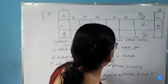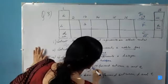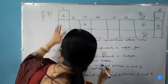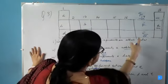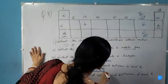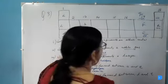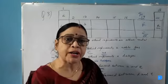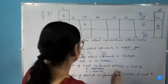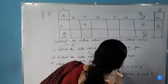Next question: what type of bond is formed between A and E? A is hydrogen, placed at the top of the alkali metal group, and E is chlorine. A bond formed between a non-metal and a non-metal is a covalent bond, so the bond between A and E will be a covalent bond.